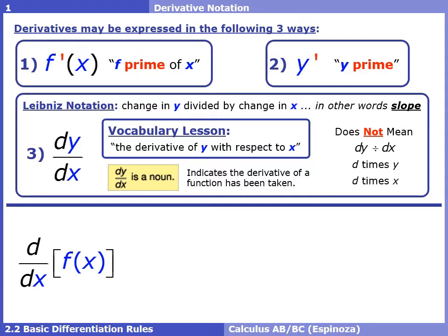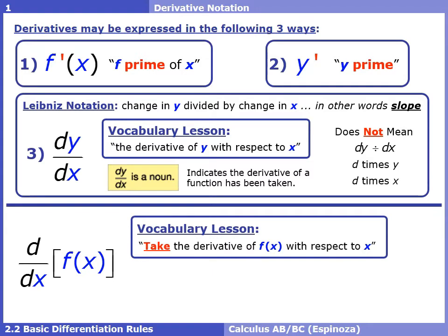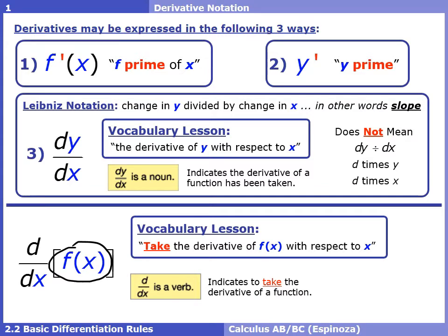A slightly different notation: you'll notice that in this notation we don't have a y in the top with a d, and there's a function off to the side of the fraction. When you see this notation, it's telling you to take a derivative of a function. This is telling you to take the derivative of f of x. So it's a verb — unlike dy dx, which is a noun, this is an action. It's asking you to take the derivative of f of x with respect to x. It doesn't mean multiplication or division — it's just notation trying to tell you something without writing out a long word sentence.